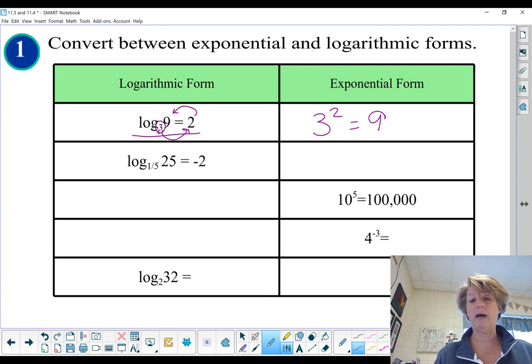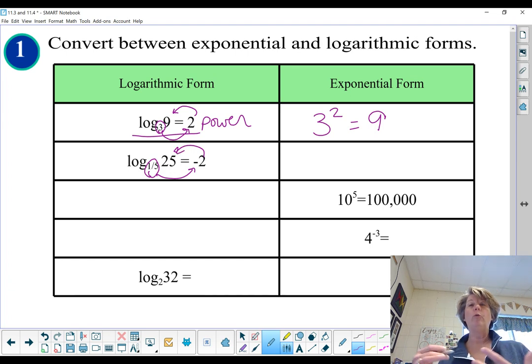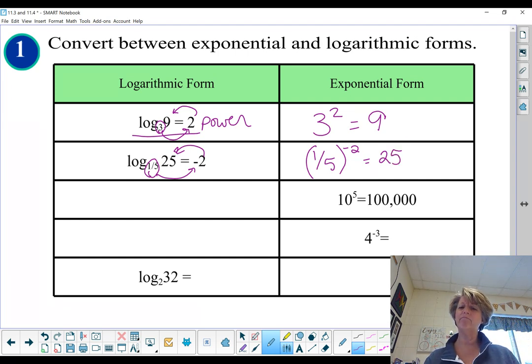Remember how we said a logarithmic function has a power answer. Let's do the next one. You know what, guys? If you would just get in the habit of writing this, it really helps you rewrite the log equation into an exponential form. So I'm going to have 1 fifth gets raised to negative 2, and that would equal 25. Does that look right? Oh, because of the negative exponent, that 1 fifth would roll over, wouldn't it? And become 5 raised to the positive second. Oh, that is 25. I like it.